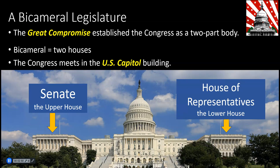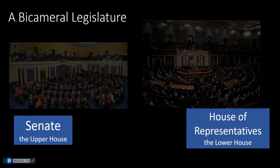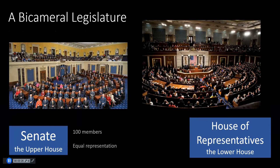The Great Compromise of the Constitutional Convention established Congress as a two-part body — a bicameral legislature with two houses. Congress meets in the U.S. Capitol building, with the Senate, or upper house, in the Senate chamber, and the House of Representatives meeting in their chamber at the other end of the building. The Senate has 100 members — two from every state — giving equal representation, while the House of Representatives has 435 members with representation based on state population.